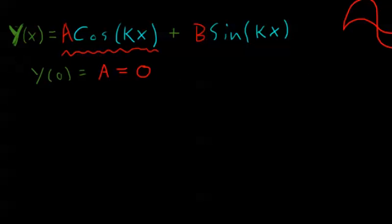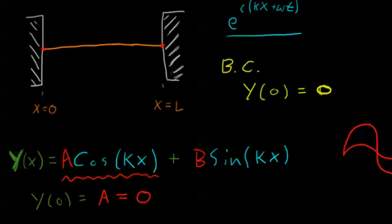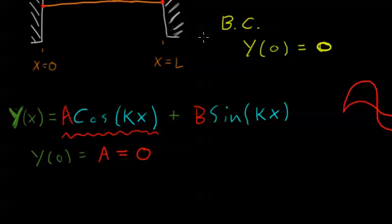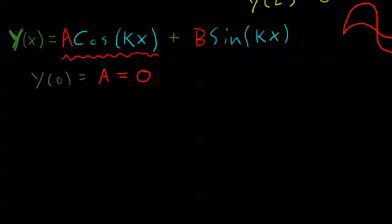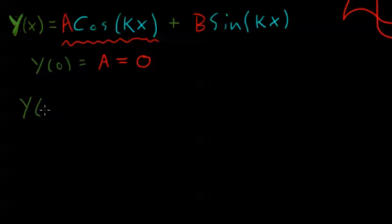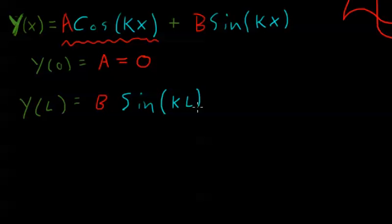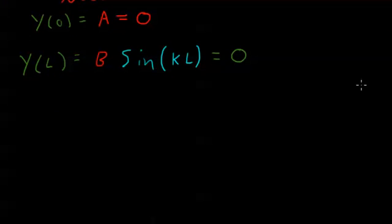Now let's plug in our other boundary condition, x equals L, and see what we get. Y of L also equals 0. So what do we get? Y of L equals b times sine of k times L, because x is L here. Because of our boundary condition, we know that this equals 0. What conditions make this equal 0?